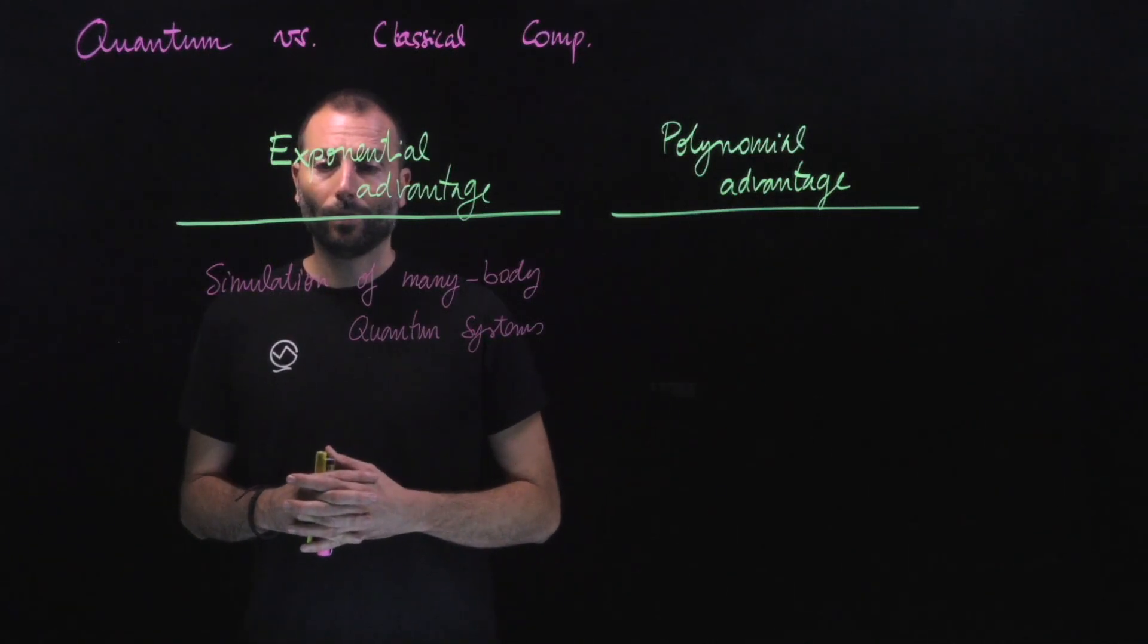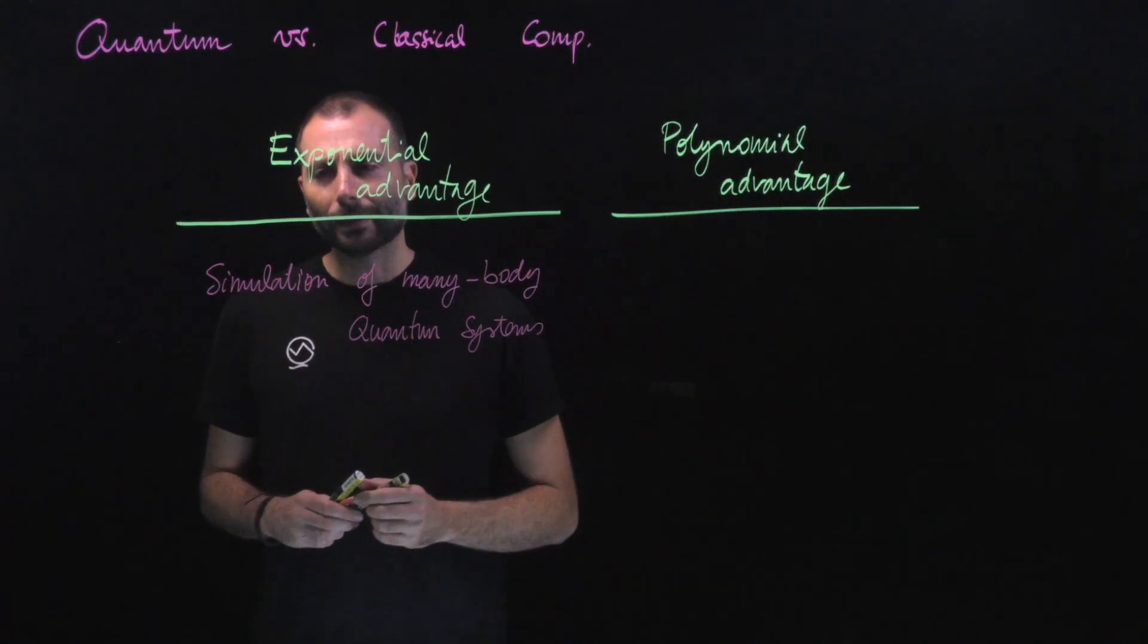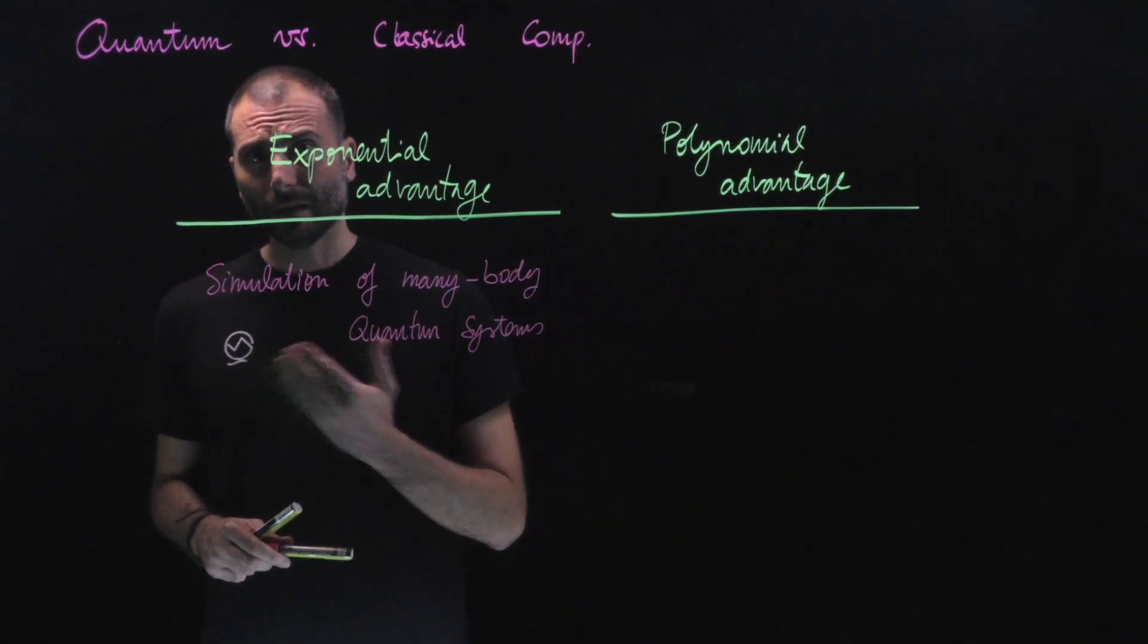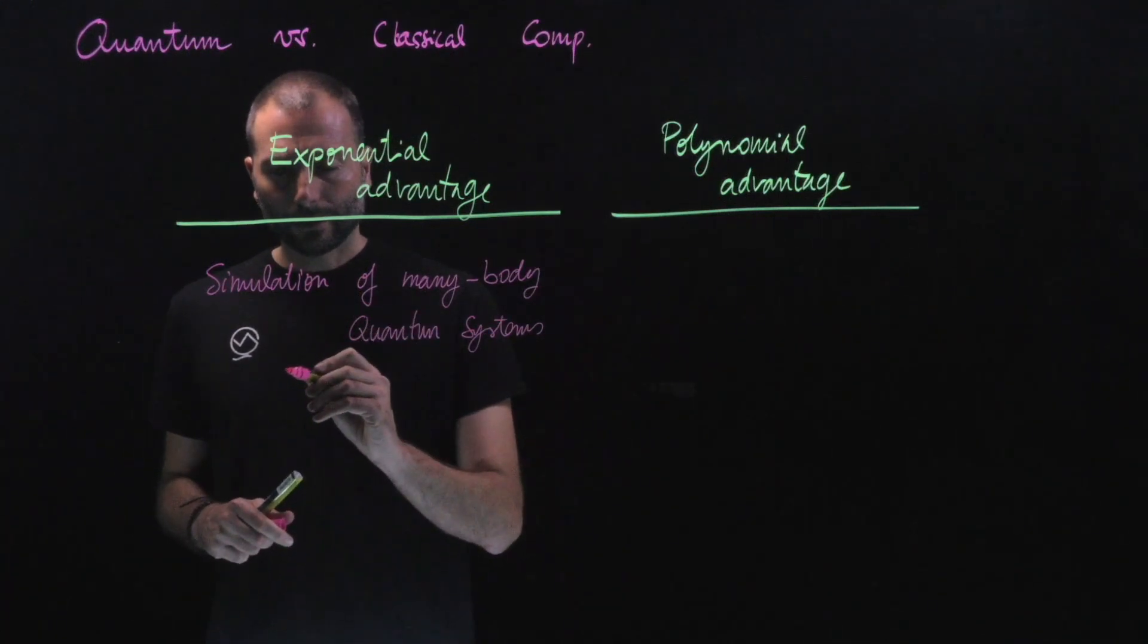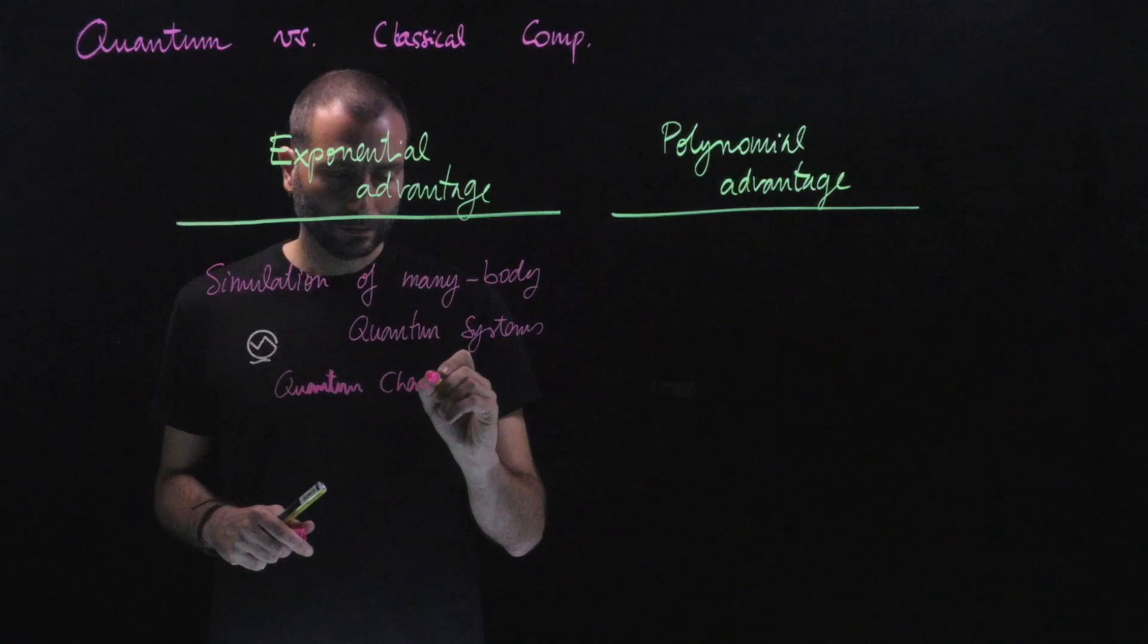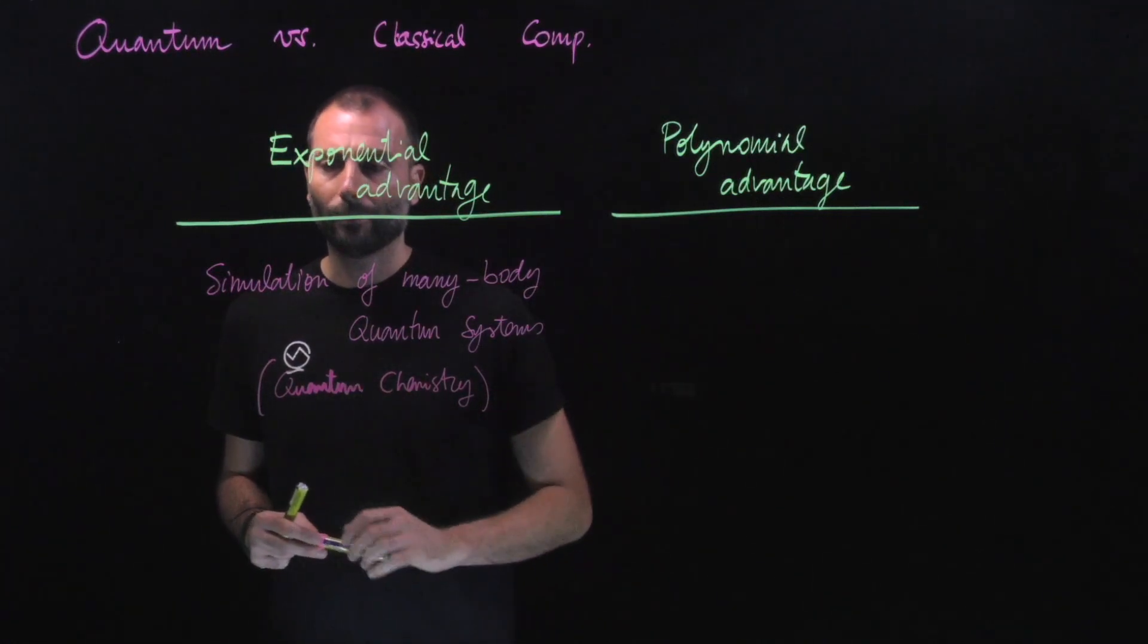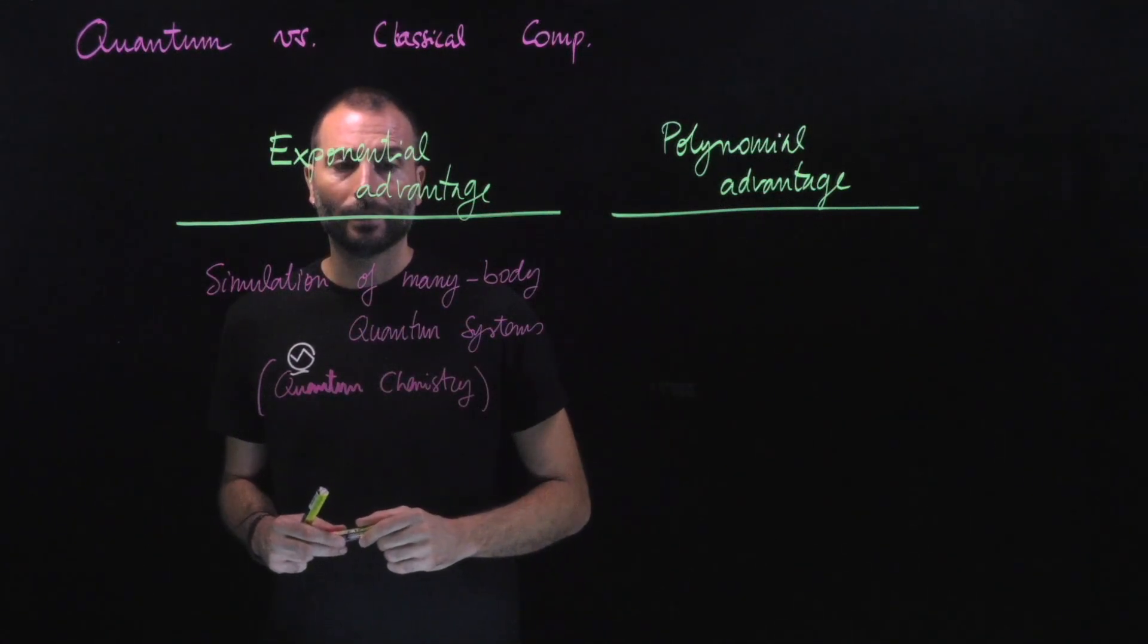There is a particularly controversial example of the simulation issue, which is quantum chemistry. Although it's on the side of physics, there's a consensus in which quantum computers will provide an exponential speedup concerning quantum chemistry. The issue is a bit more controversial in the sense that not everybody agrees that we will find an exponential advantage. But with this exception, that quantum chemistry is controversial, in general simulation of quantum systems will be a very good application.